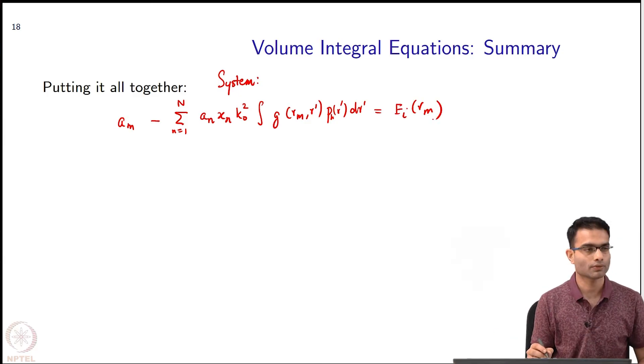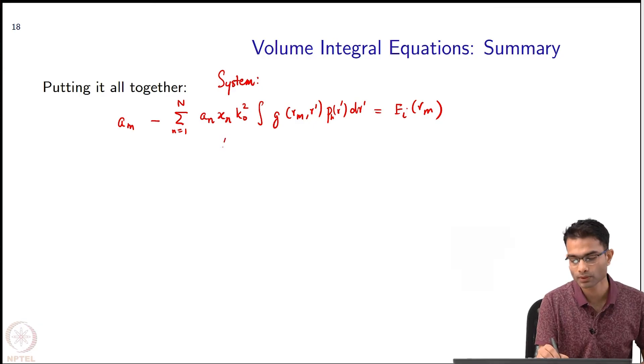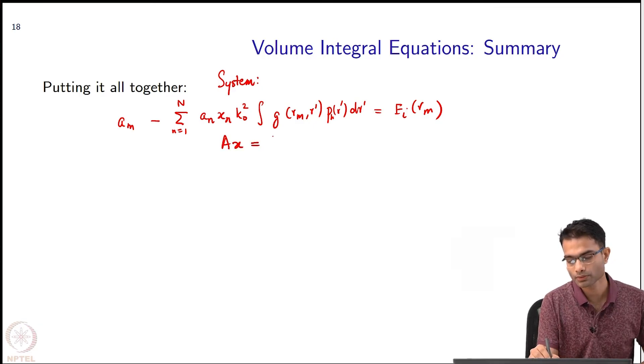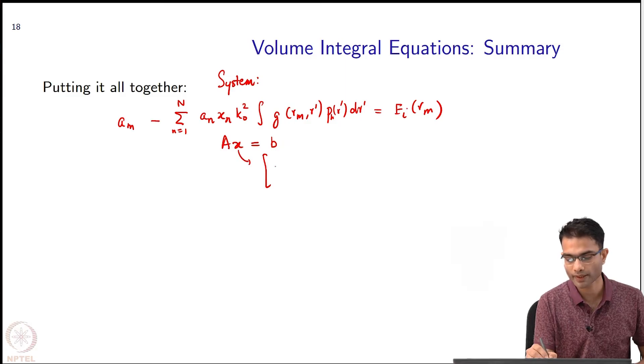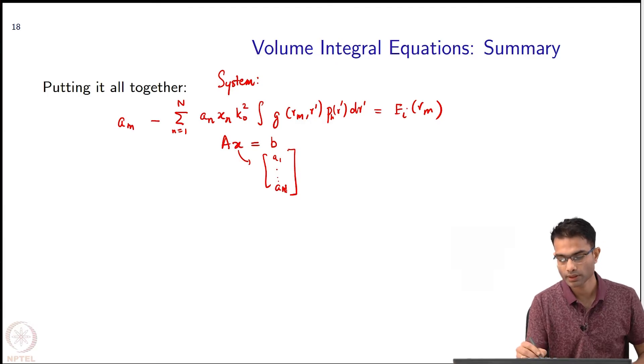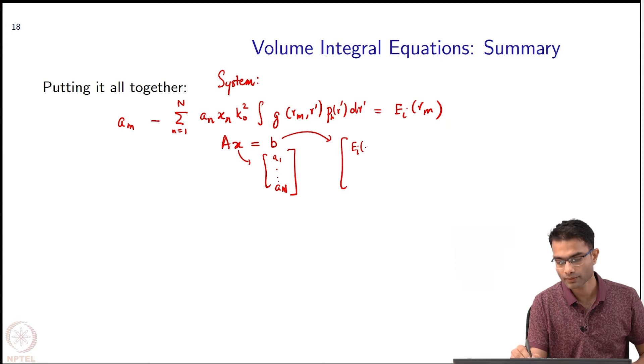So this gives us a full system of equations of the form Ax = B, right? The x is a column vector of A_1 up to A_N, and B is a column vector of the incident field at various points r_1, E_i(r_n).